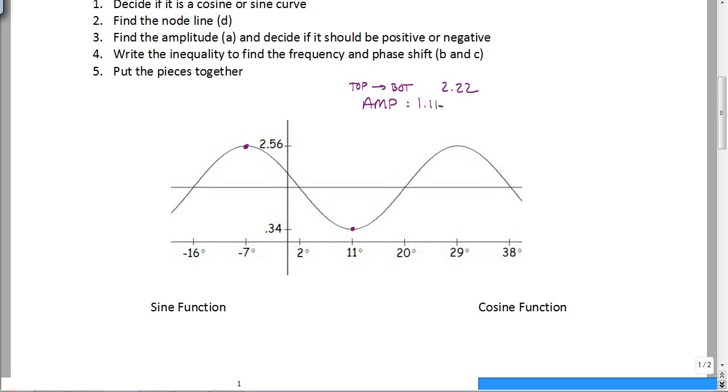2.56 minus 0.34 is 2.22 which means your amplitude is half of that. So your amplitude is 1.11. So now you also have to find your vertical shift, also known as your D value. So to find that, all you have to do is think about what this is and again you just need to find the average of those guys.